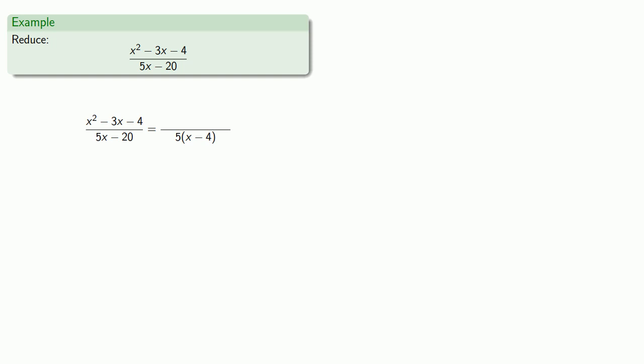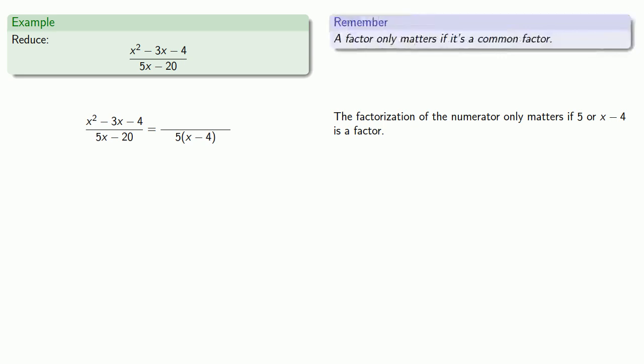So at this point we can try to factor the numerator. But remember, the factorization of the numerator only matters if 5 or x minus 4 is a factor. Because a factor only matters if it's a common factor. And so we check. Can we write our numerator, x squared minus 3x minus 4, as x minus 4 times something?